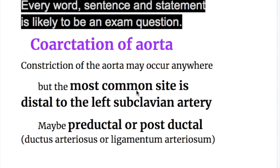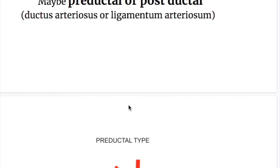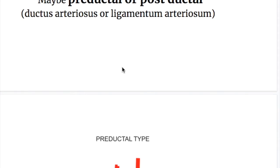Coarctation of aorta, or constriction of the aorta, may occur anywhere in its length, but the most common site is distal to the subclavian artery. It may be pre-ductal or post-ductal — that is, before or after the ductus arteriosus or ligamentum arteriosum.